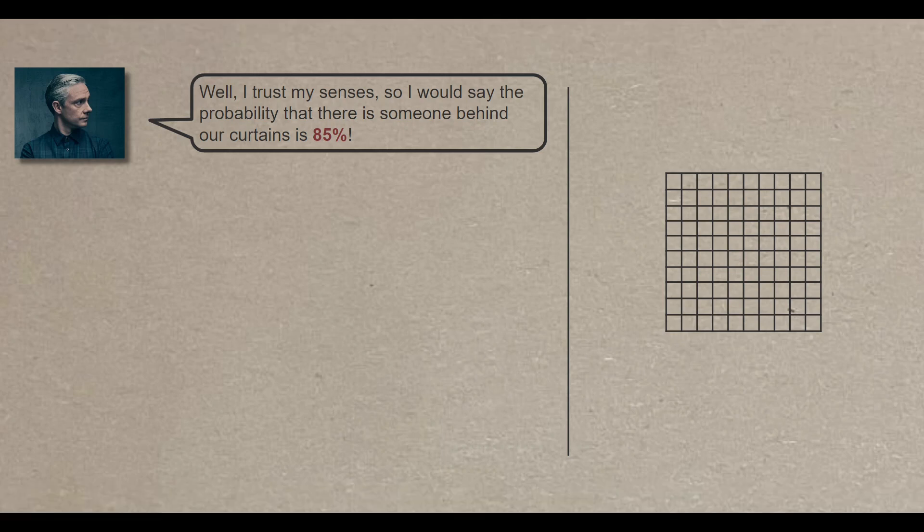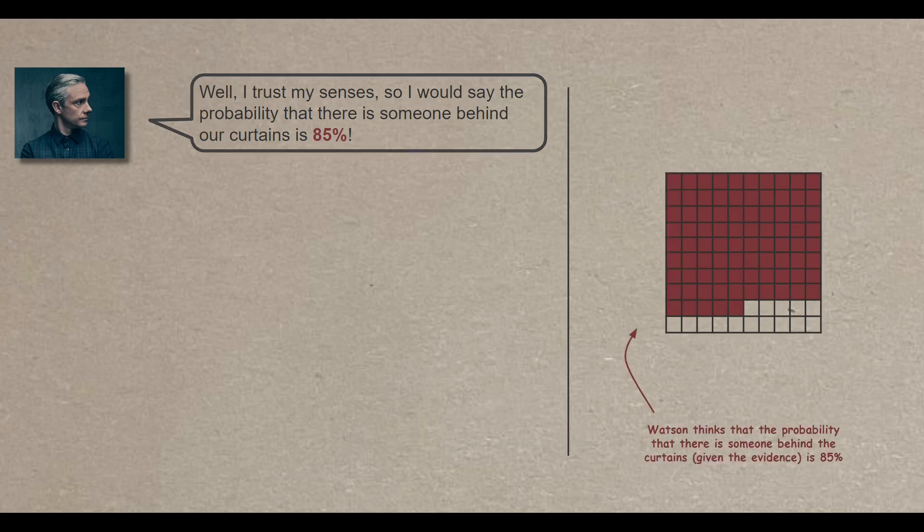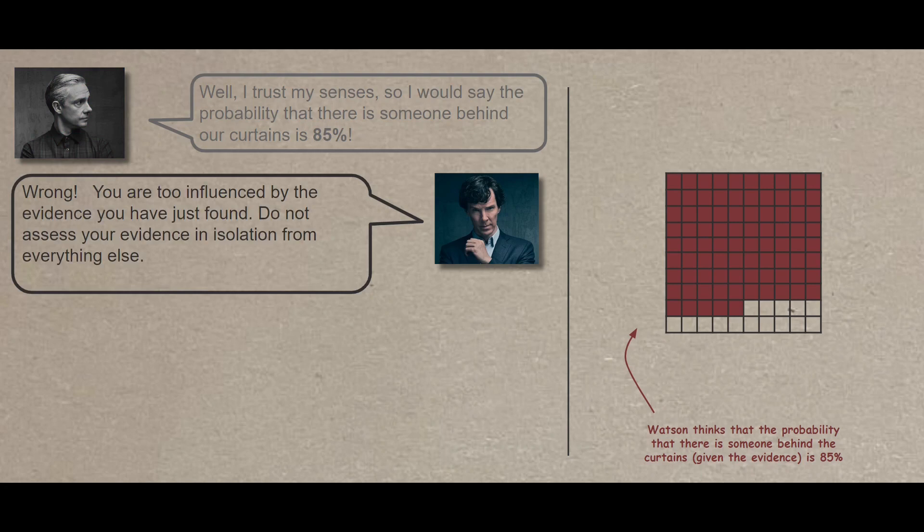Now, let's visualize that. Based on the evidence Watson experienced that he heard some noises, he thinks that the probability there is someone behind the curtains is 85%. Wrong. You are too influenced by the evidence you have just found. Don't assess your evidence in isolation from everything else. You need to get some perspective Watson.